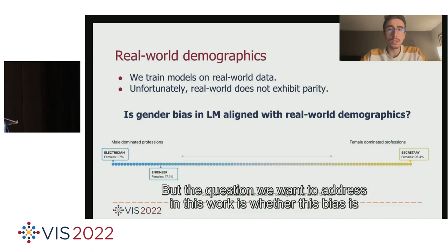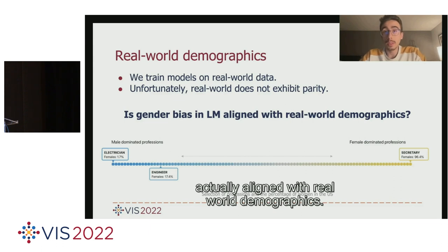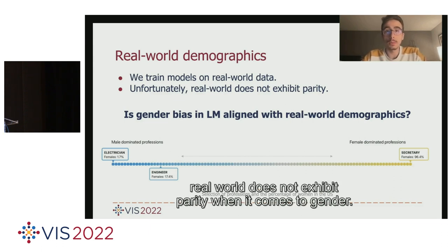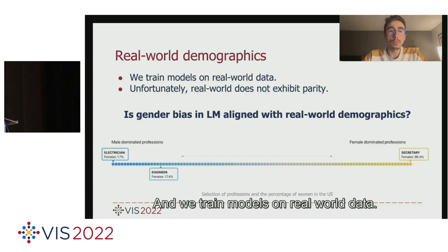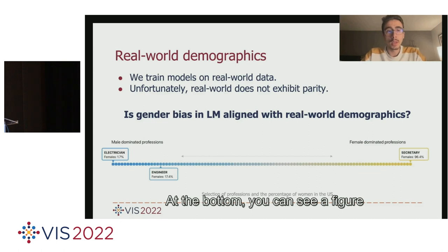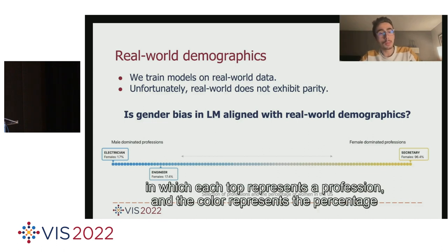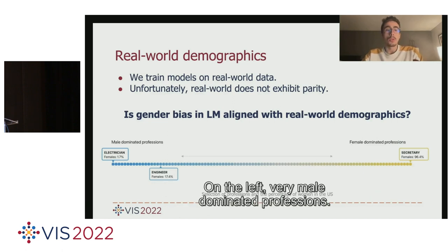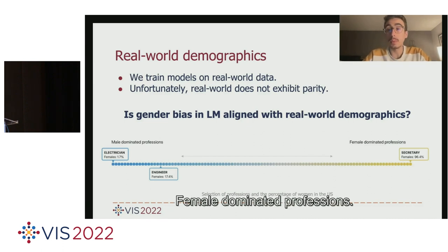The question we want to address in this work is whether this bias is actually aligned with real-world demographics. Unfortunately, the real world does not exhibit parity when it comes to gender, and we train models on real-world data. You can see a figure in which each dot represents a profession, and the color represents the percentage of females working in that profession in the United States — on the left, very male-dominated professions; on the right, very female-dominated professions.